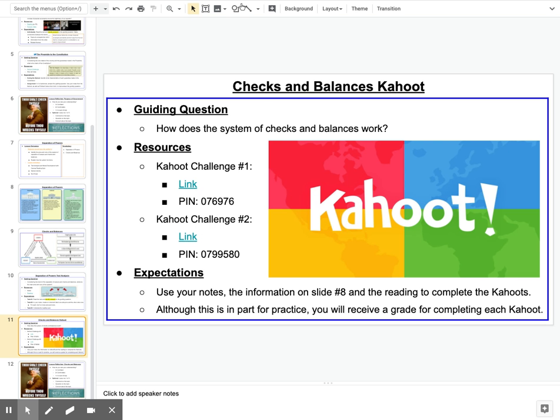So as you can see, for expectations, use your notes, the information on slide number eight and the reading to complete the Kahoots. Now, this is for practice. Just kind of get a sense of how the system works. If we were in class, I'd be talking it through with you a little bit more. But I'm going to give you a grade for completing this. So probably about five points each, something like that. It's going to go into your reading category, reading quiz category.